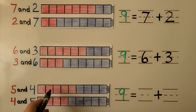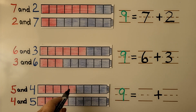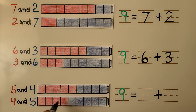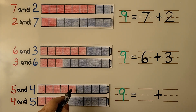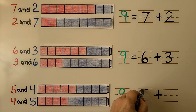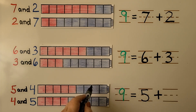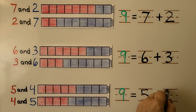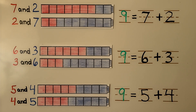Here we have a cube train with nine cubes, and five are red and four are blue. We can switch it around and say four red and five blue. Nine is equal to one, two, three, four, five red — we can write the five — and one, two, three, four blue. We need to count and be sure there are nine cubes before writing the numbers into the equation. We have to make sure we're counting the correct number of cubes.